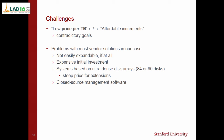The challenge is that low price per TB and affordable increments are by definition contradictory goals. Problems with most vendor solutions in our case: it's often not easy to expand, if at all. And it's usually an expensive initial investment, especially when the vendor uses only proprietary ultra-dense JBODs — there's a steep price for extension. Another problem is closed-source management software: when you're on a turnaround and have no source to fix the issue on site, that's a no-go.